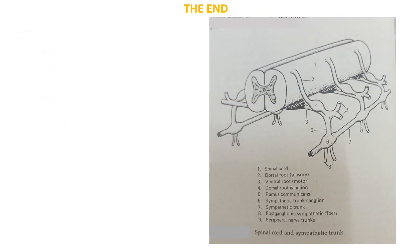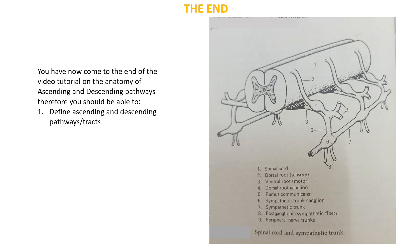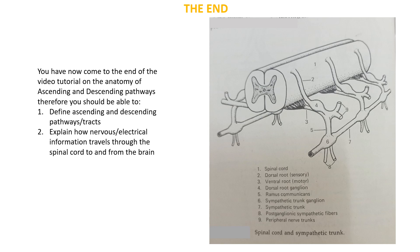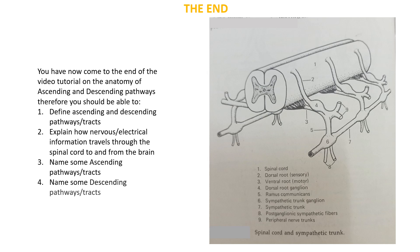You have now come to the end of this short tutorial video on the anatomy of the ascending and descending pathways. You should be able to define the ascending and descending pathways or tracts, explain how nervous or electrical information travels through the spinal cord to and from the brain, and name some ascending and descending pathways. Thank you for watching and listening.